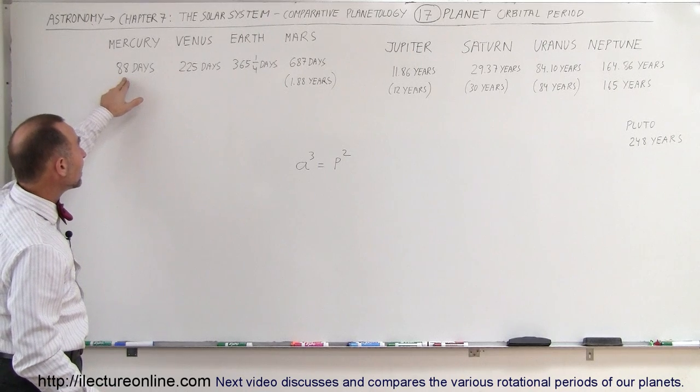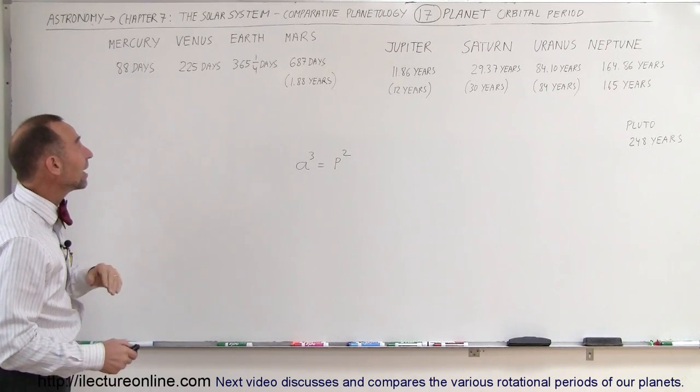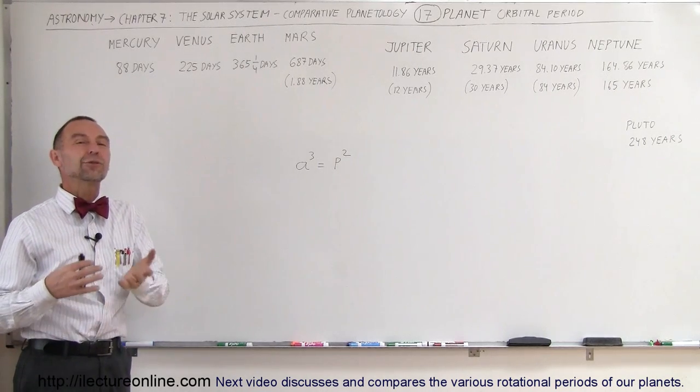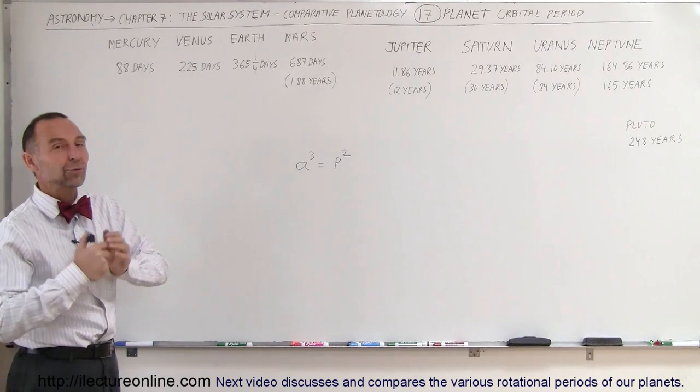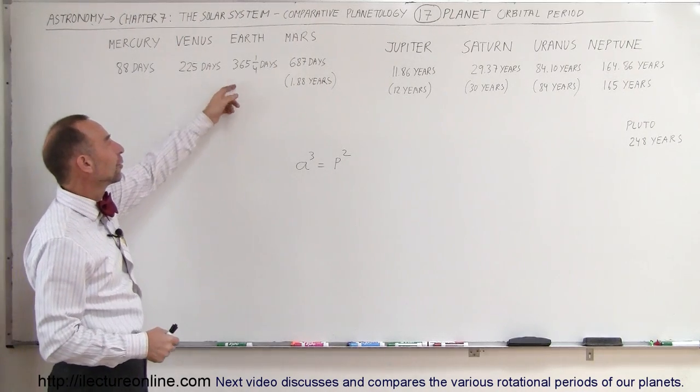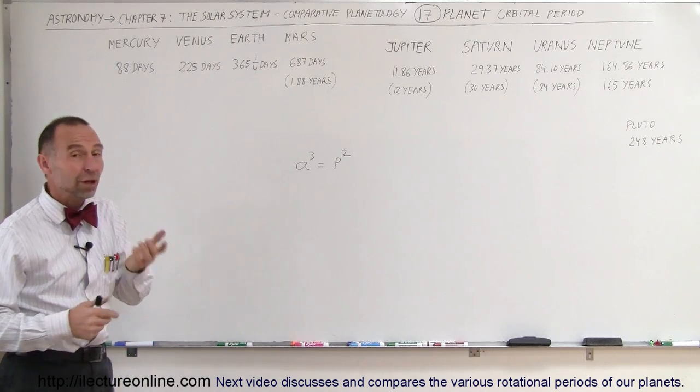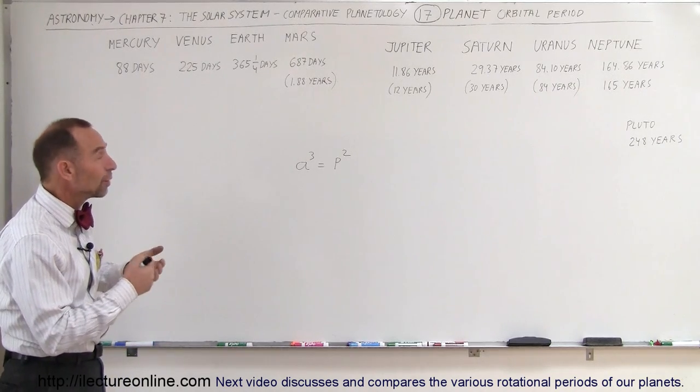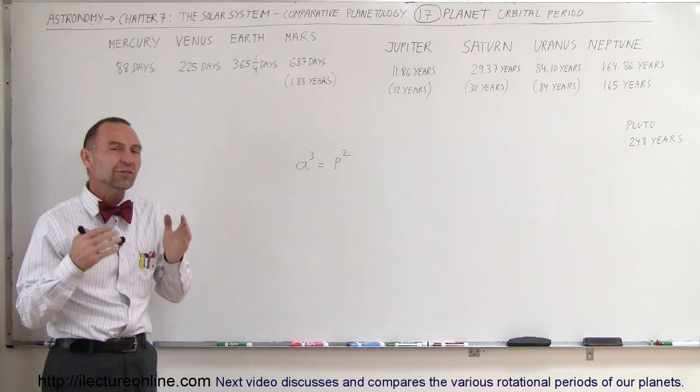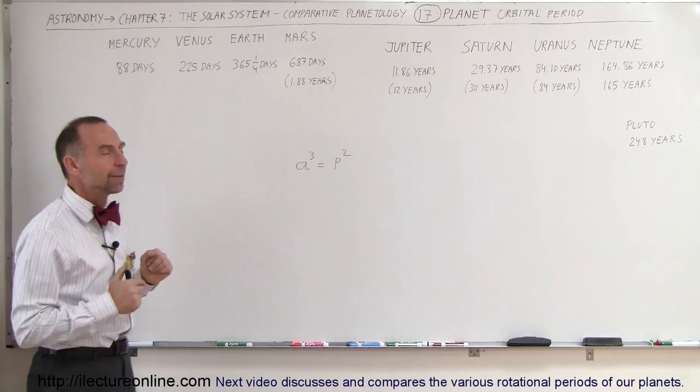For Mercury, it's only 88 days, Venus is 225 days, and for the Earth, it's just slightly over 365 days, 365 and a quarter days. That's why we need that leap year every four years. Mars, almost double, 687 days or 1.88 years. But for all these terrestrial planets, that's a relatively short period of time.